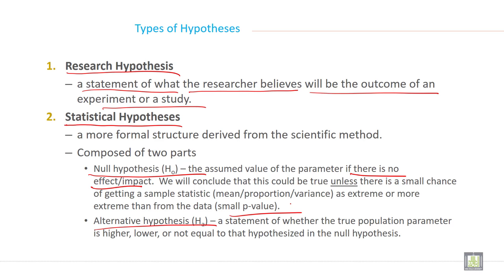What is alternate hypothesis? A statement of whether the true population parameter is higher, lower, or not equal to that hypothesized in the null hypothesis.